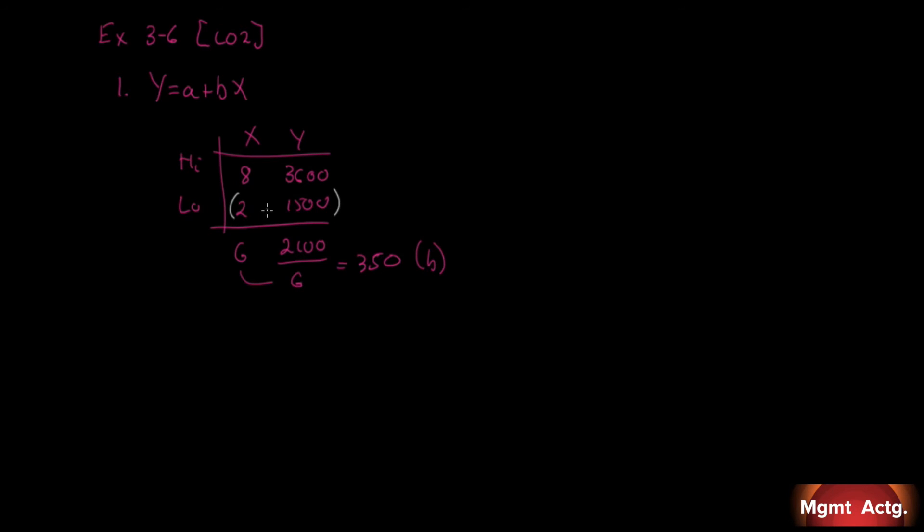So what we need now is to solve for a. Well, we can recognize that this 2, 1,500, is an xy-coordinate. So in other words, y, 1,500 must equal a plus 350x times 2. So a equals 1,500 minus 700, which equals 800. So what does our formula look like? Therefore, y equals a, this is our a over here, 800 plus 350x. And remember, I like to draw boxes around them. There we go. So that's not so bad, right?